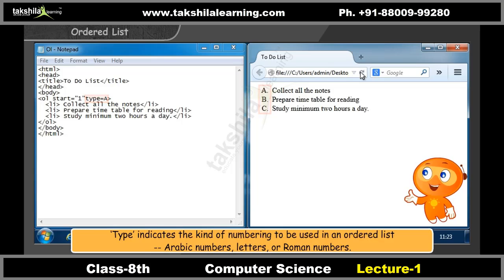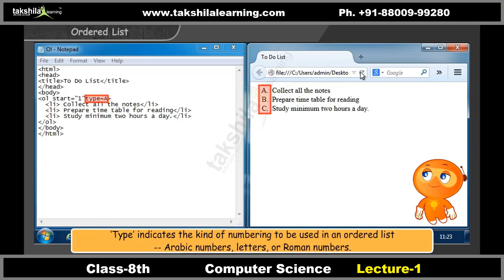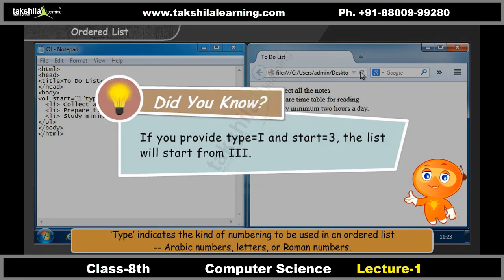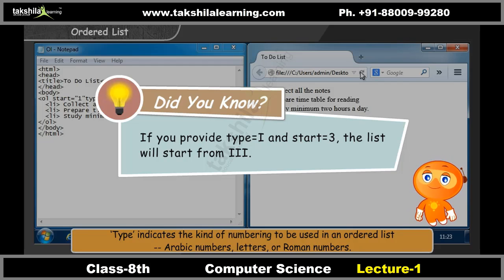The type attribute defines whether you want to use Arabic numbers, letters, or Roman numbers. Did you know? If you provide type equals 1 and start equals 3, the list will start from 3.